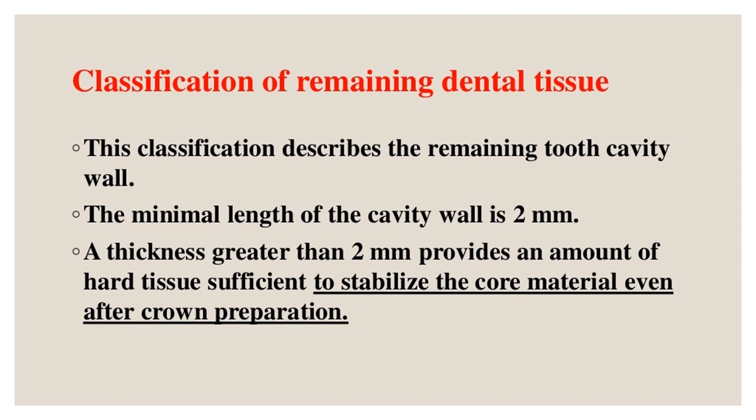Classification of remaining dental tissue: this classification describes the remaining tooth cavity wall. The minimal length of the cavity wall is 2 millimeters; a thickness greater than 2 millimeters provides sufficient hard tissue to stabilize the core material even after crown preparation.